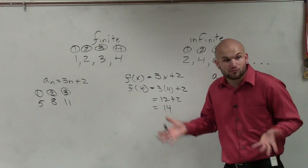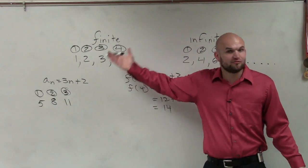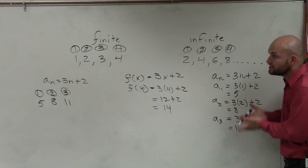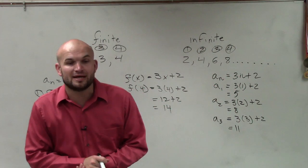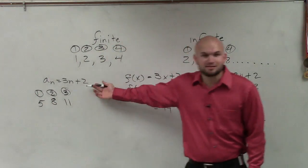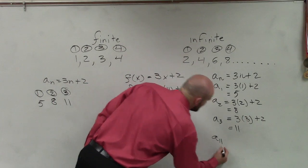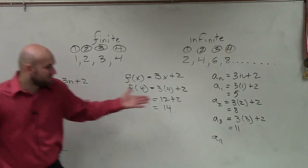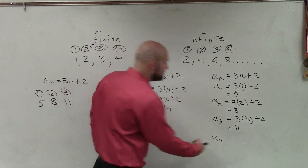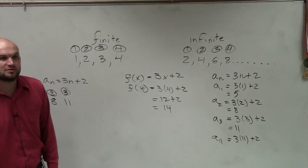Do you guys see how I just created this list from a rule? The two things we're going to be working on today are: one, creating your sequence from a rule, and two, when given a sequence, finding the rule. Another thing we might ask is: what is the 11th term? Instead of adding up all the way, just plug in 11: 3 times 11 plus 2. Three times 11 is 33, plus 2 is 35.